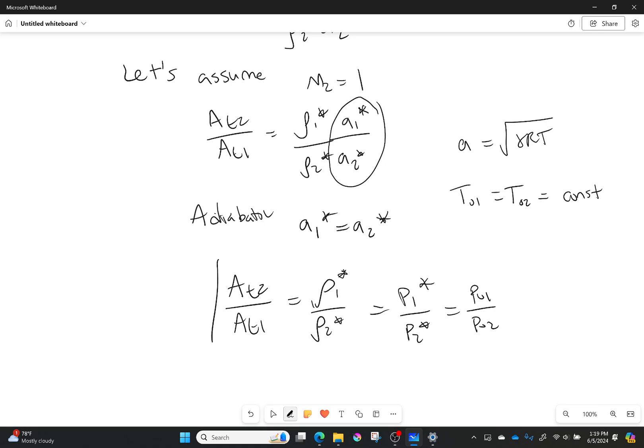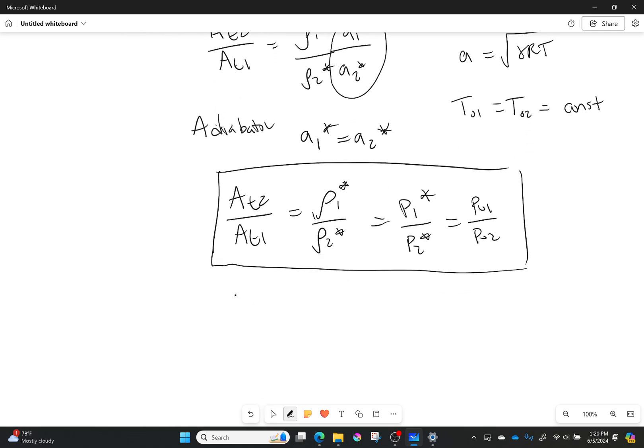And I can also tell, using our isentropic relation equations, that would mean that this is equal to P naught 1 over P naught 2. So we got there in the end, we figured out this relationship between the two throats. And what does it tell us?